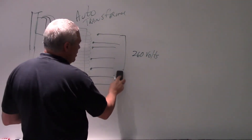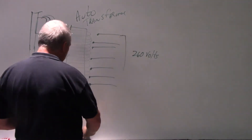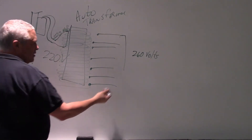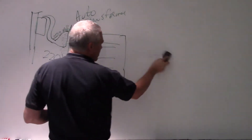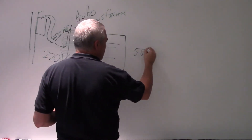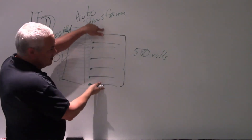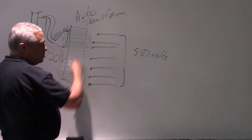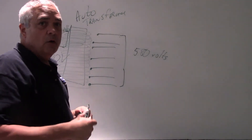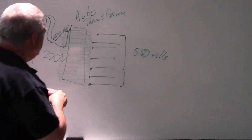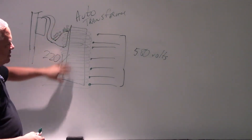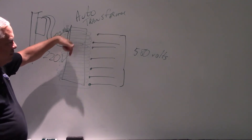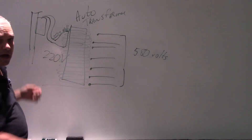The input voltage is always the same — 220 volts. That's basically the idea behind an auto transformer. We're using 220 volts and we're going to amplify that current in the auto transformer before we pass it off to the high voltage transformer.